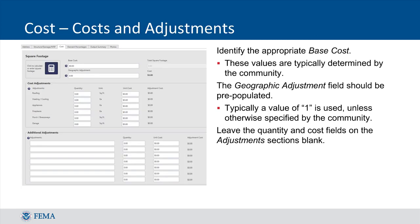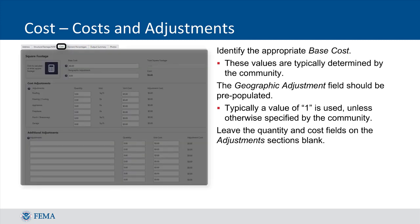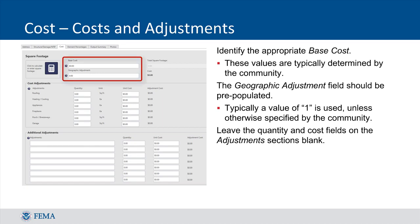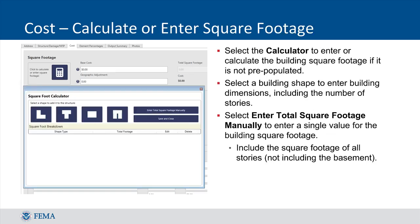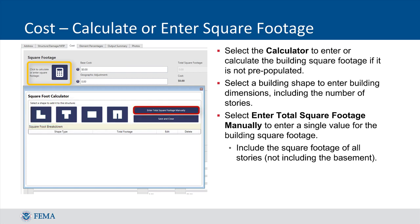The Cost tab requires minimal data input. If the Damage Undetermined box was checked in the Structure tab, then all the data fields will be grayed out in the Cost tab, and you can continue to the Output Summary tab or Photo tab. You must record a base cost and a geographic adjustment. The cost and additional adjustments do not require input but can be used if desired by the community. If square footage was not imported with the property records, you must record the estimated square footage of the structure. By clicking the calculator icon in the top left of the page, you can use the built-in square footage calculator or manually enter square footage calculated outside of SDE.